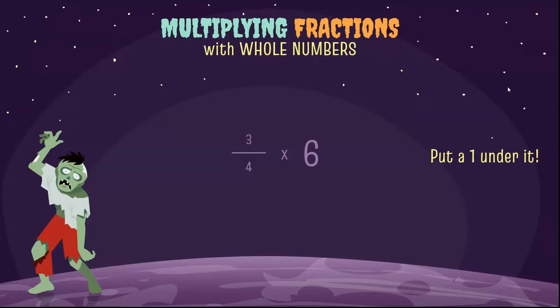The first thing we're going to do is put a 1 under that whole number. It's easy to multiply with fractions as long as we have two fractions. So that 6 needs to become a fraction, and we're simply going to put a 1 under it.